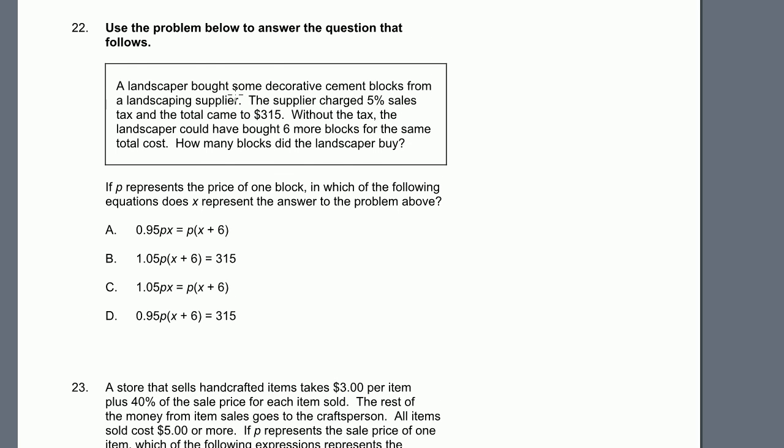Next problem. A landscaper bought some decorative cement blocks from a landscaping store. The supplier charged 5% sales tax, and the total came to $315. Without the tax, the landscaper could have bought 6 more blocks for the same total cost. How many blocks did the landscaper buy? If p represents the price of one block, in which of the following equations does x represent the answer to the problem above? So x equals blocks bought.